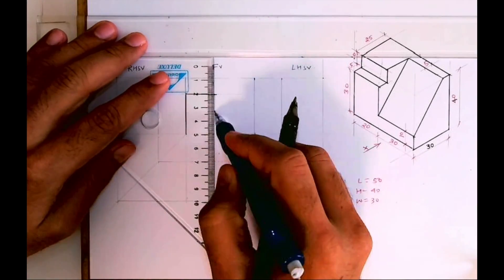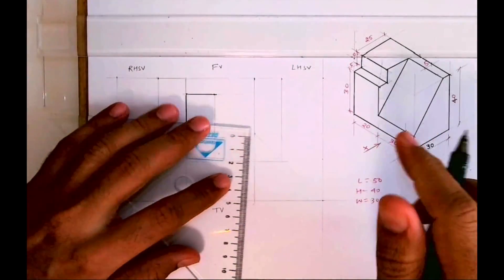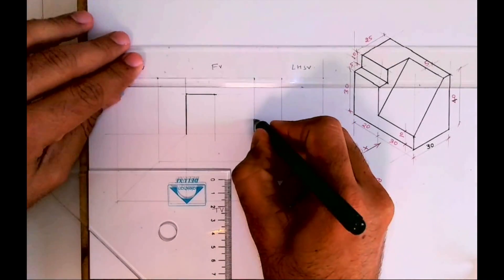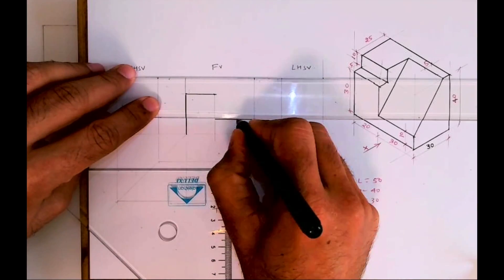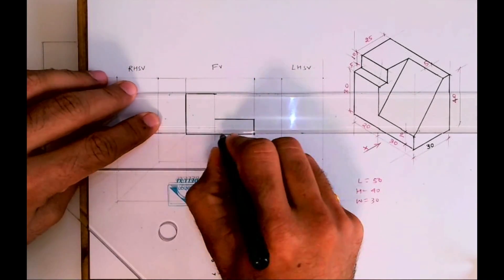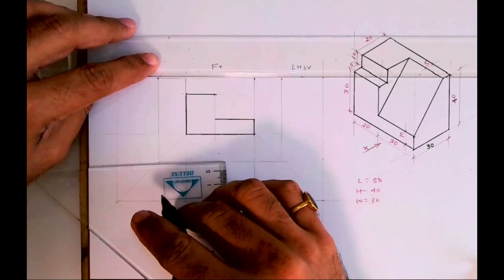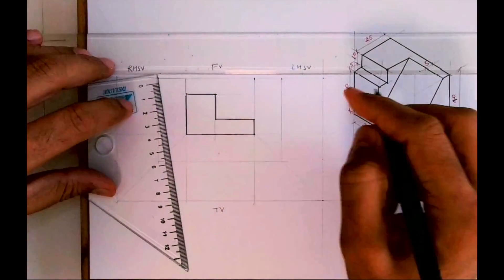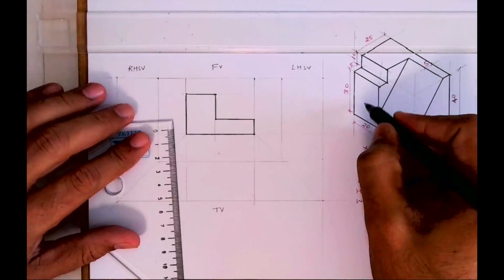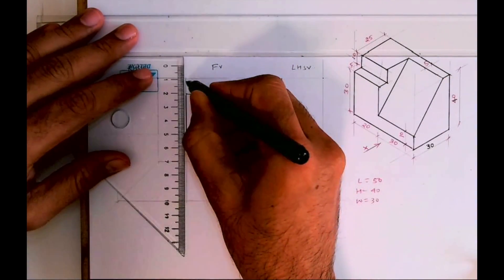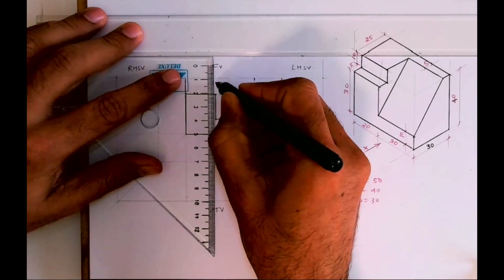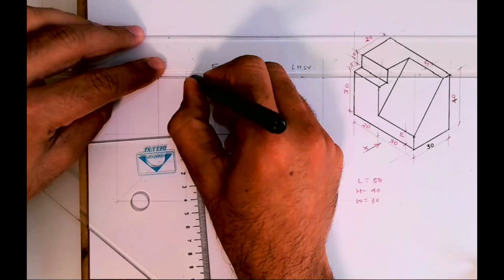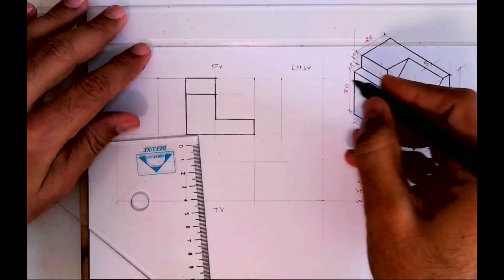Then you go down. You have to go down by 20 because 30 minus 10, or you can take 10 from here and draw horizontal line. So this is how you will get this L shape in this part, upper part which is a rectangle, in this part.